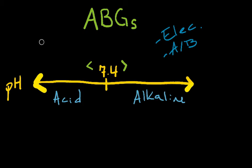In this video we're talking about arterial blood gases, or ABGs. It's going to take at least a couple of videos to explain this thoroughly because it's very detailed and gets pretty in-depth. In this video I just want to talk about the main components of ABGs. ABGs are drawn from an artery — usually the radial artery in the wrist, though sometimes the brachial or femoral artery — not from a vein.